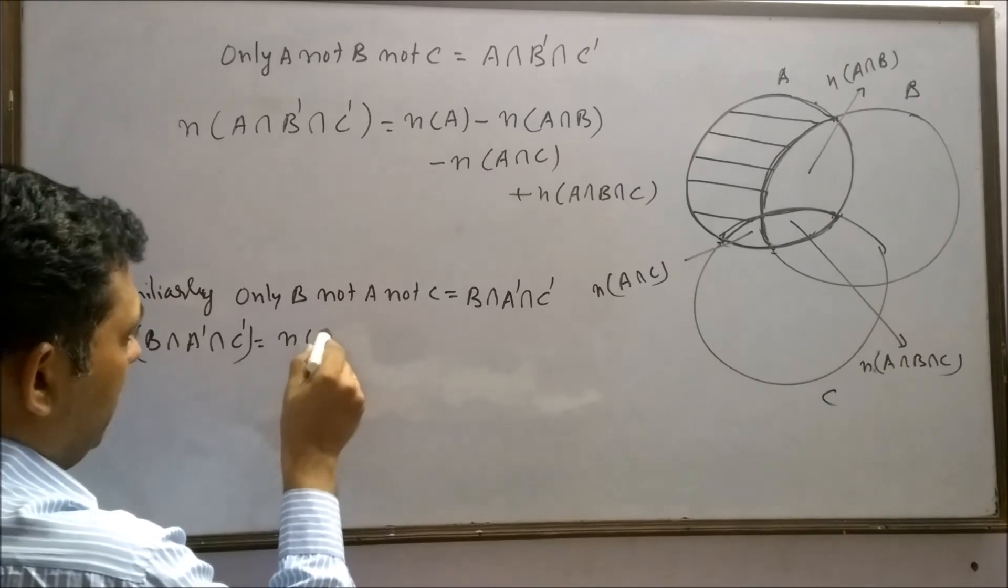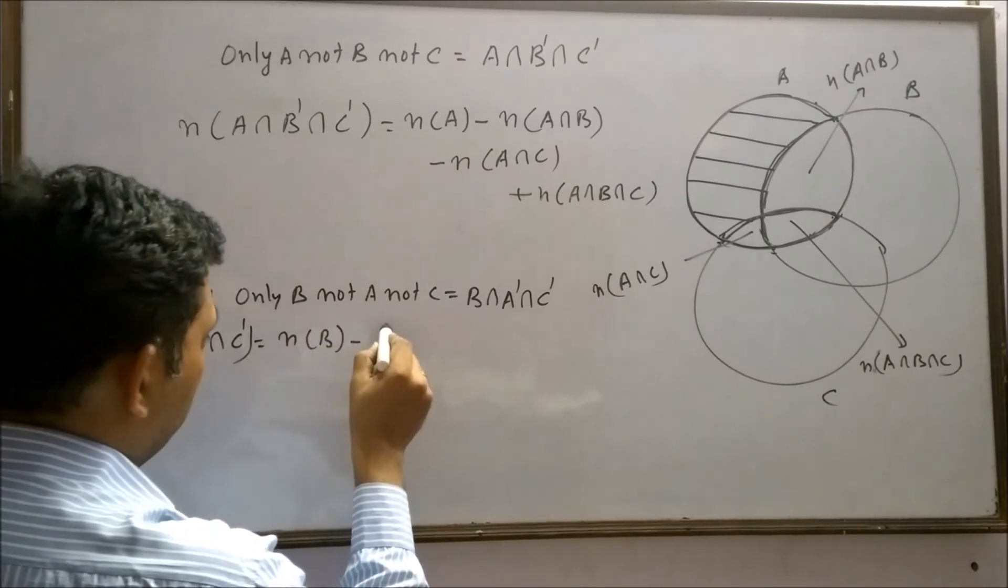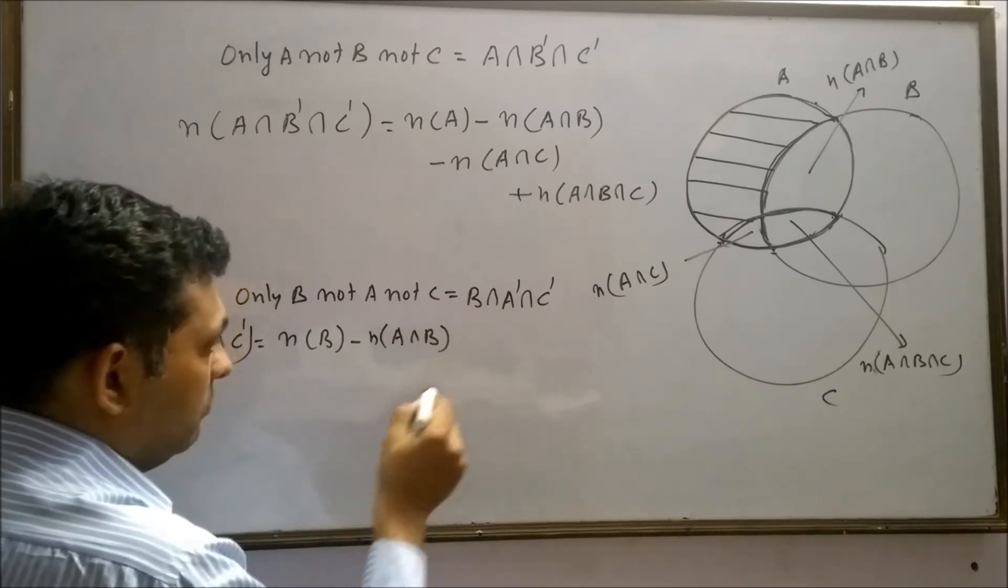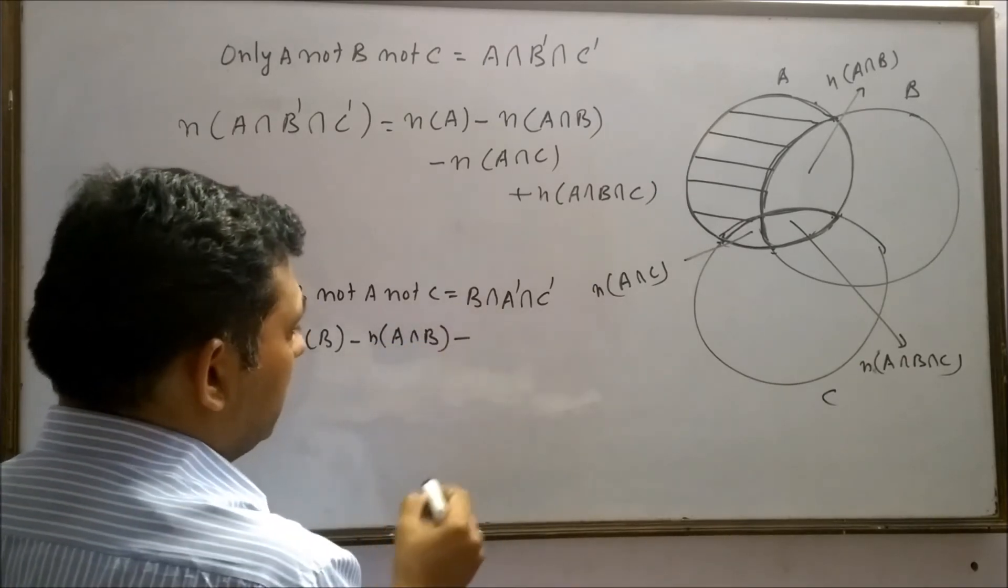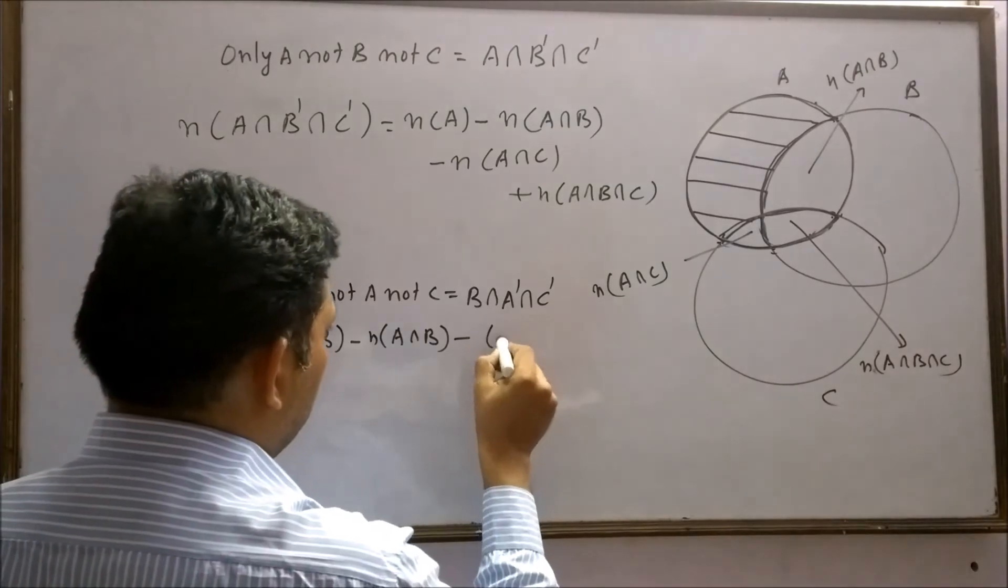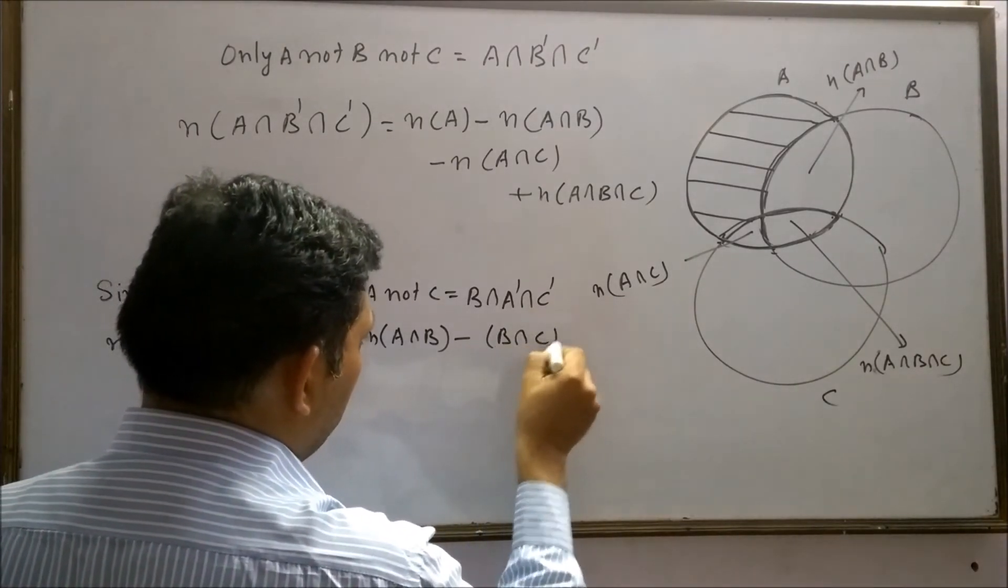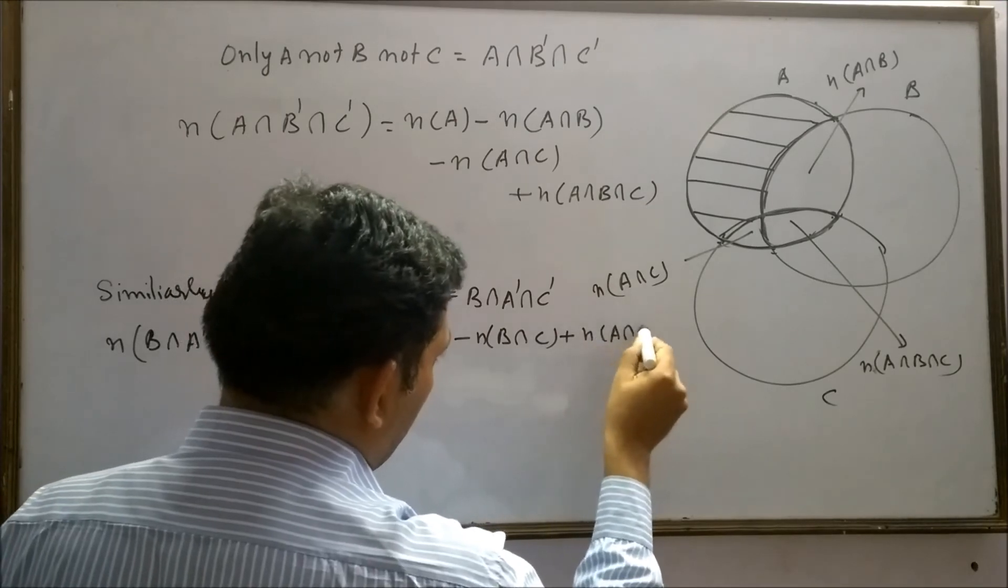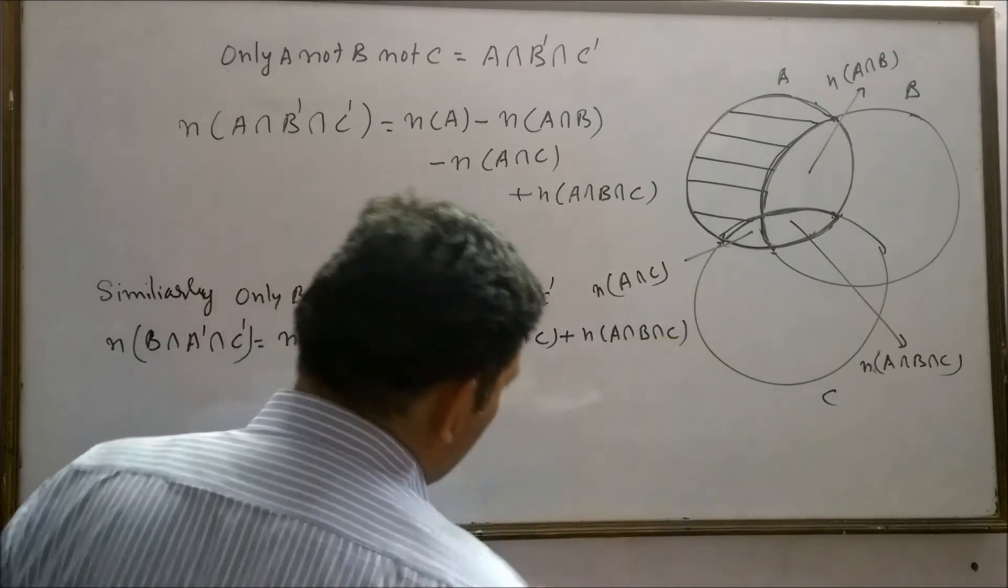n(B) minus A intersection B minus B intersection C plus n(A intersection B intersection C).